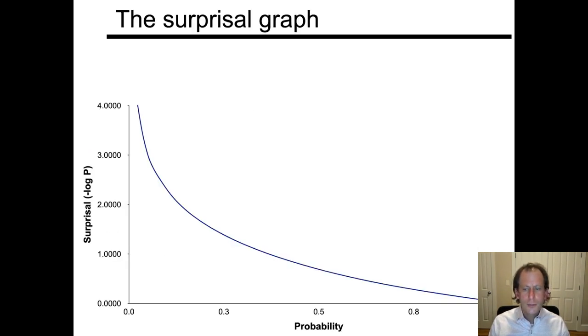This, you may remember, is a surprisal graph. An obligatory event with probability 1 carries 0 bits of information. It might as well not have occurred. It doesn't contain any information, but it has to occur. And probability goes off asymptotically to infinity as probability decreases toward 0. An impossible event is infinitely surprising, but fortunately, it never occurs.